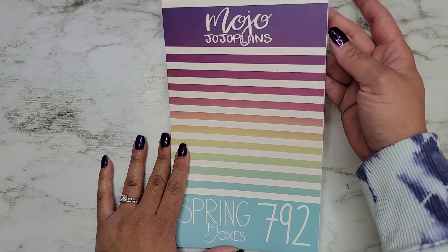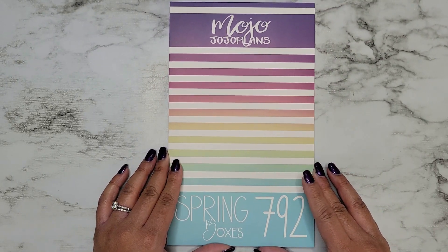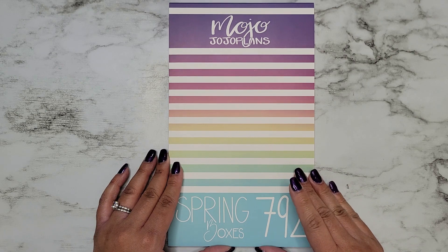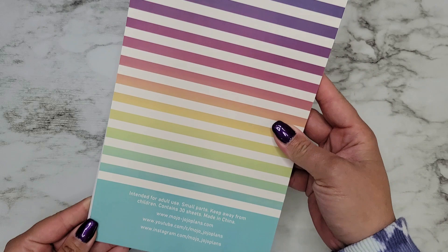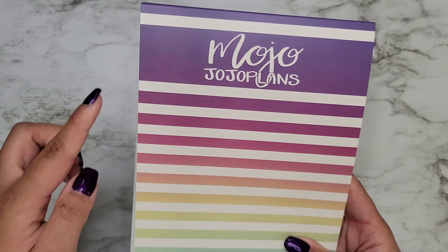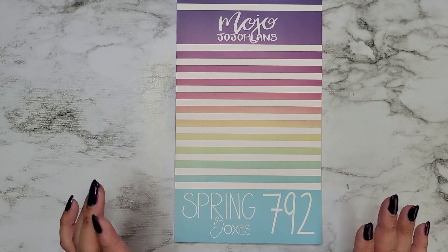That option will be available for this as well. My patrons did already get to pre-order this book. I'm just really excited to share this book, so let's go ahead and dive into it. It's exactly like Autumn and Winter Boxes, so it does have 792 stickers in it.